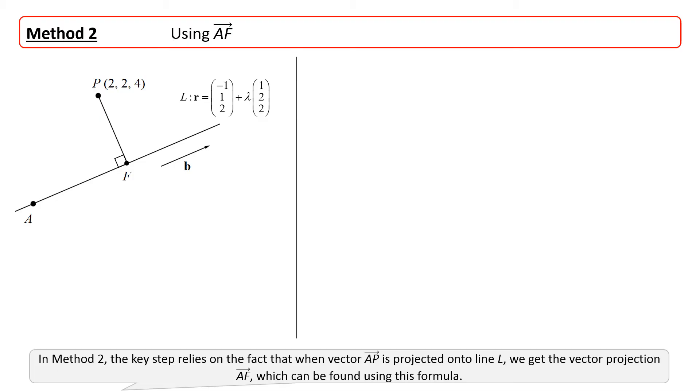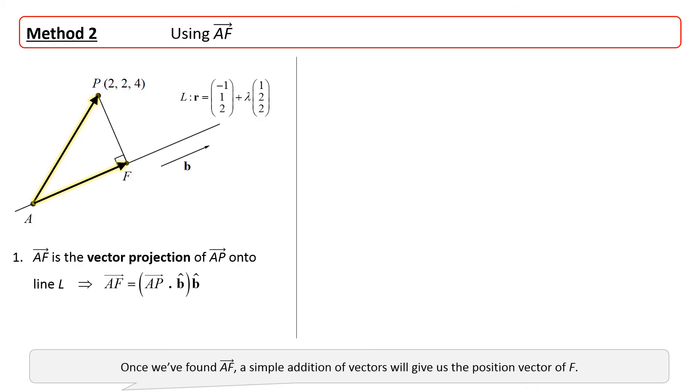In method 2, the key step relies on the fact that when vector AP is projected onto line L, we get the vector projection AF, which can be found using this formula. Once we've found AF, a simple addition of vectors will give us the position vector of F.